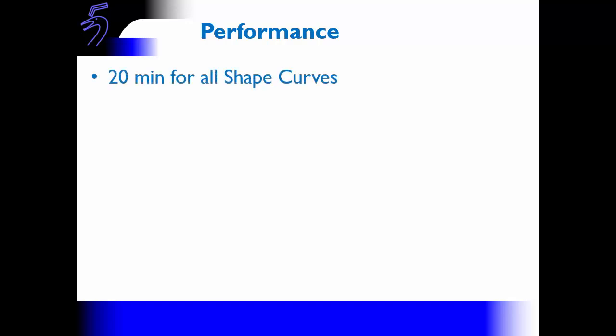That would be the complete process, so we move on to talk about the performance. For the shape curves themselves, that process can be generated in quite a quick amount of time — 20 minutes, which is far quicker than you would be able to do through normal manual means. However, the core curve network can take much longer, particularly in this case because most of the curves were located around the keel, and because the keel has got a lot of support areas around there, it's very difficult to understand exactly what was going on with the shape.